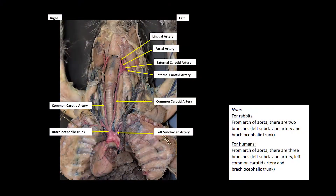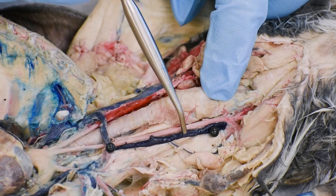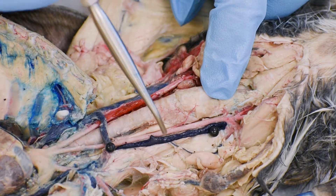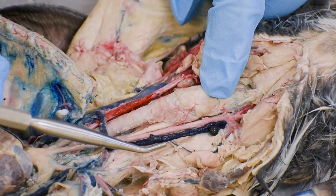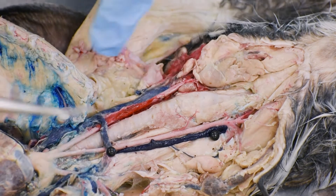Now we will follow the vein, so that means in the reverse direction. From the brain, the blood is collected by the major branch, the most prominent one — this is the external jugular vein, left external jugular — coming back to the heart.